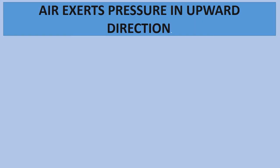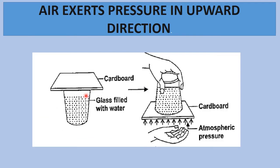Let us do an activity to show that air exerts pressure in the upward direction. Take a glass filled with water up to the brim, making sure there are no air bubbles. Cover the tumbler with a piece of cardboard, press it with your hand, and turn the tumbler upside down. Remove your hand and observe. You will see that the cardboard and water are held in place because air pressure is acting on the cardboard in the upward direction. This experiment shows that air exerts pressure upward.